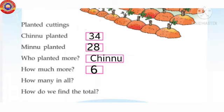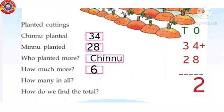Next question: how many in all? Find the total. Add the two numbers: 34 plus 28. First we add numbers in the ones column: 4 plus 8 equals 12. Write 2 under the ones column and 1 carry forward. Next add the tens column: 3 plus 2 plus 1 equals 6. The answer is 62.